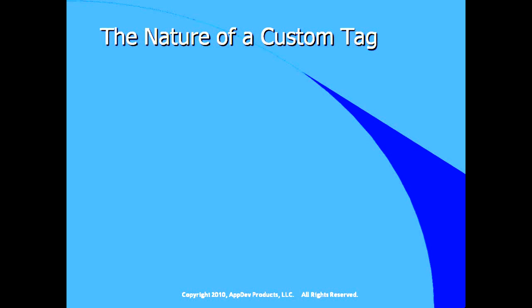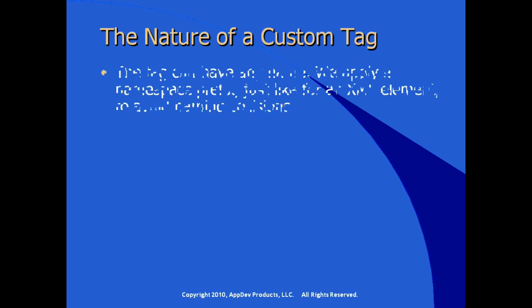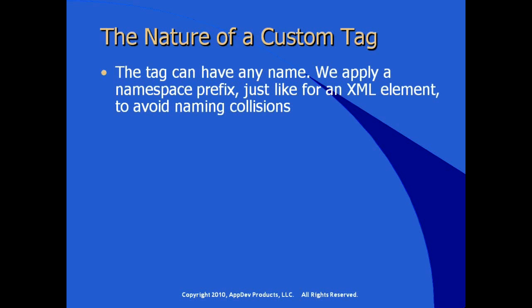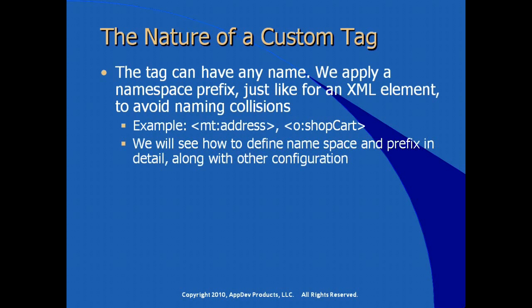What does a custom tag look like? A custom tag, just like any other tag, can have any name. We apply a namespace prefix just like we do for other tag libraries in order to avoid naming collisions. For example, if we had a custom tag called address or shop cart and we prefixed it with 'mt' or whatever makes sense in our application, we're now reusing a piece of code referenced with a prefix that is namespace-scoped. We'll look at how to define namespace and prefix in detail along with other configuration as we go through.